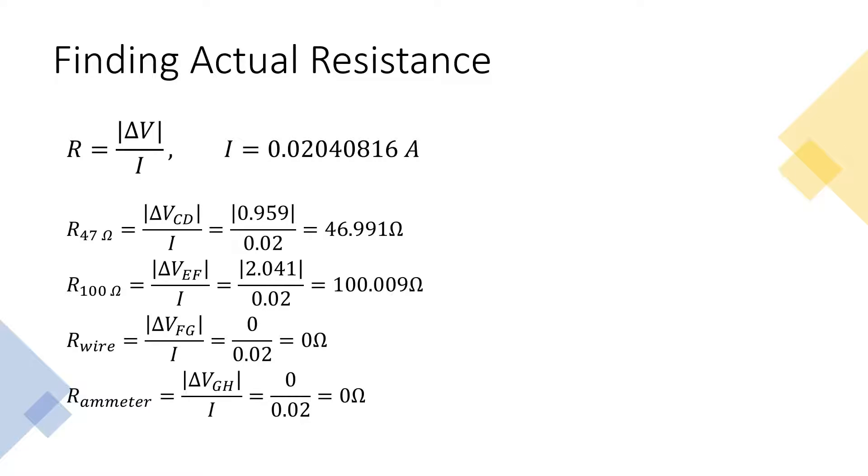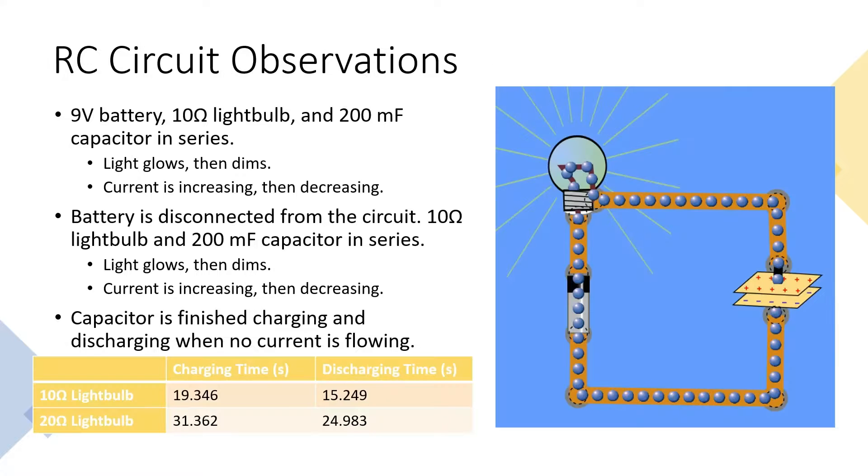RC circuit observations. When a 9 volt battery is connected to a 10 ohm light bulb and 200 microfarad capacitor in series, the light glows brightly before dimming. When this first happened, the capacitor was charging and the current in the circuit was increasing until the capacitor was fully charged and the current then decreased to zero.